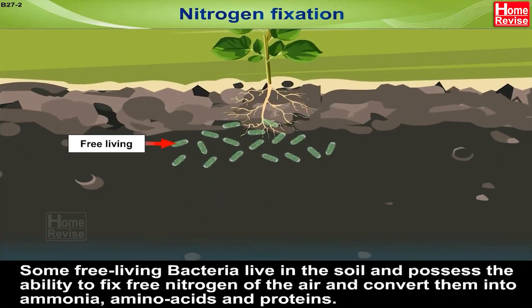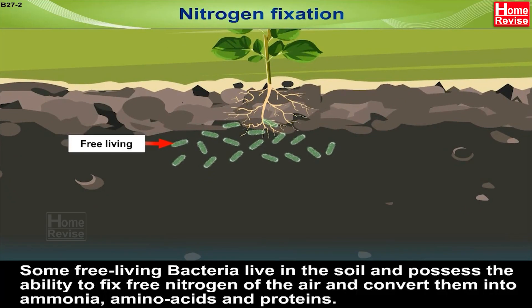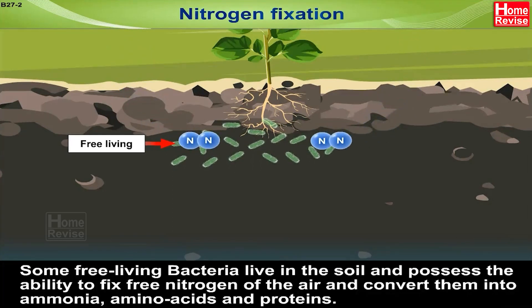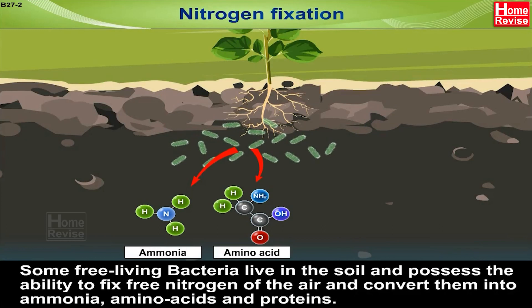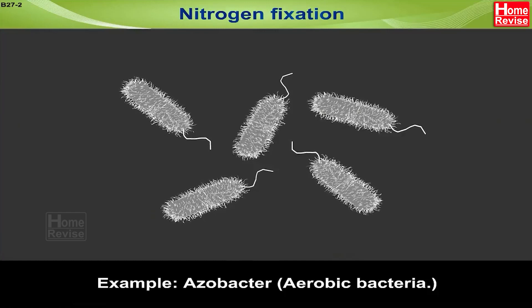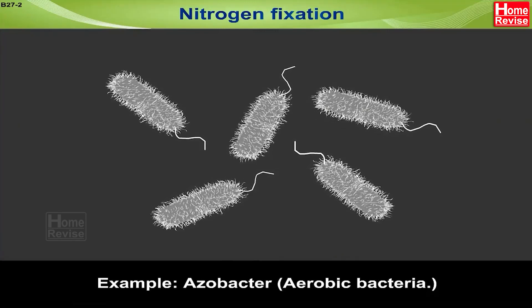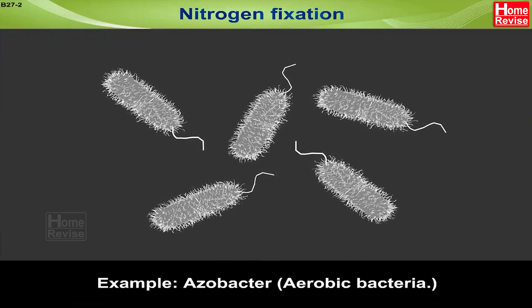Some free-living bacteria live in the soil and possess the ability to fix free nitrogen of the air and convert them into ammonia, amino acids, and proteins. For example, Azobacter, i.e. aerobic bacteria.